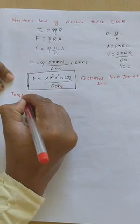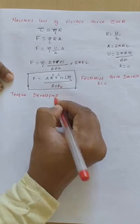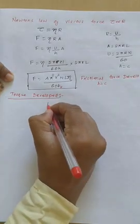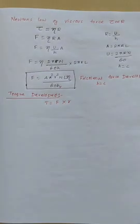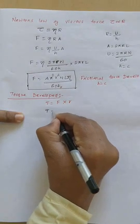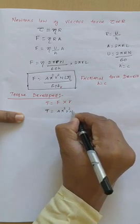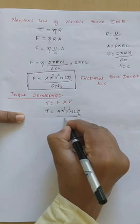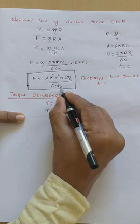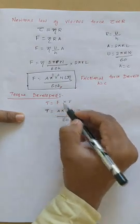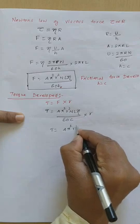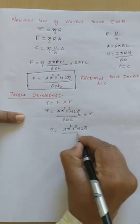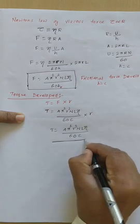If we want to find out the torque developed, torque T equals frictional force F multiplied by radius R. So the torque developed T will be 4π²R²NL·eta divided by 60 into C, multiplied by R, giving T equals 4π²R³NL·eta divided by 60 into C. This is the torque developed for the bearing.